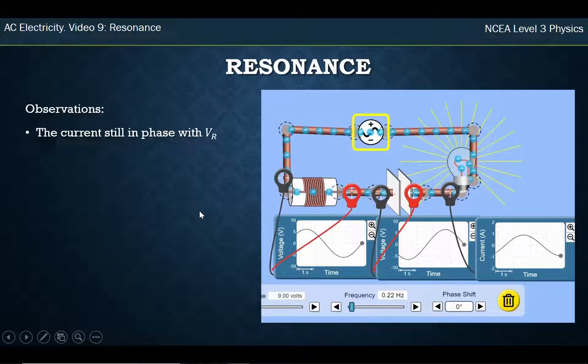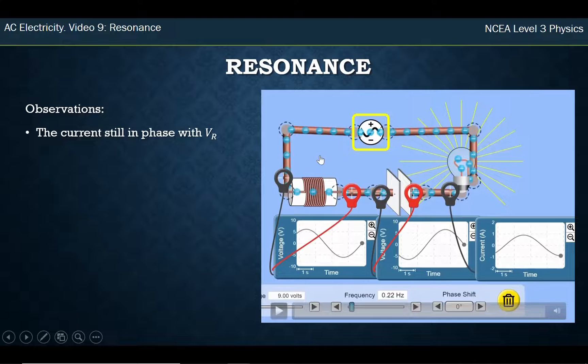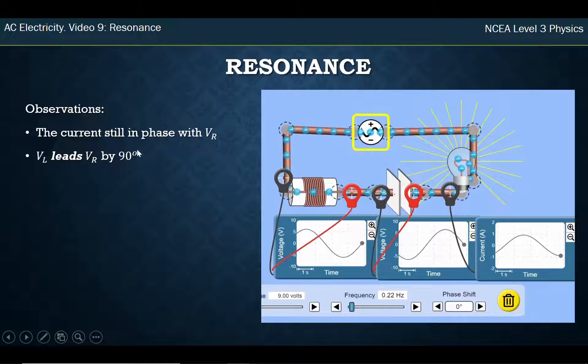So my observations are the current's still in phase with VR. That's what we found last time. We always found that the inductor leads my resistor by 90 degrees, my capacitor lags by 90 degrees. Nothing's changed there.